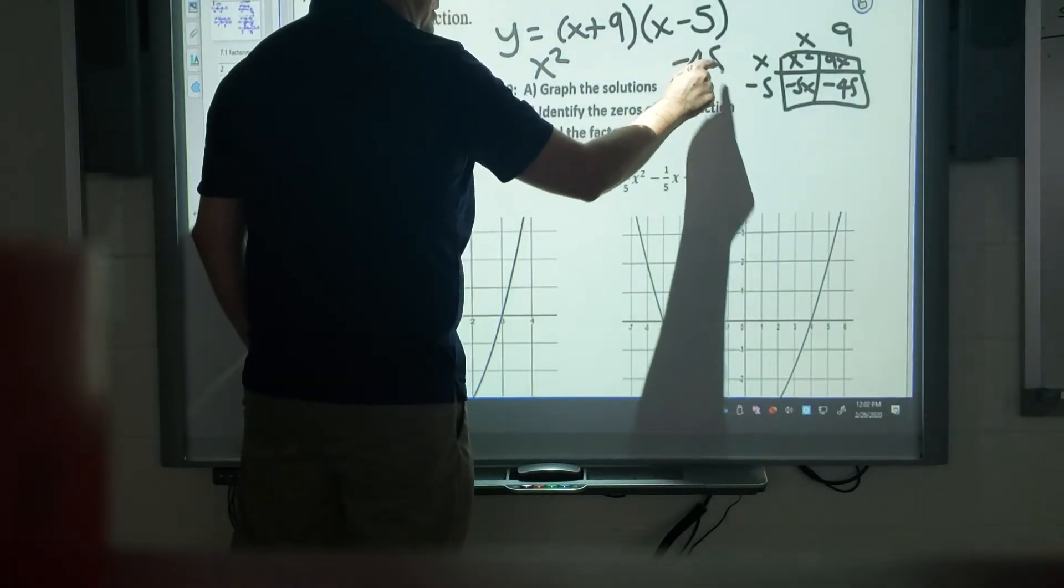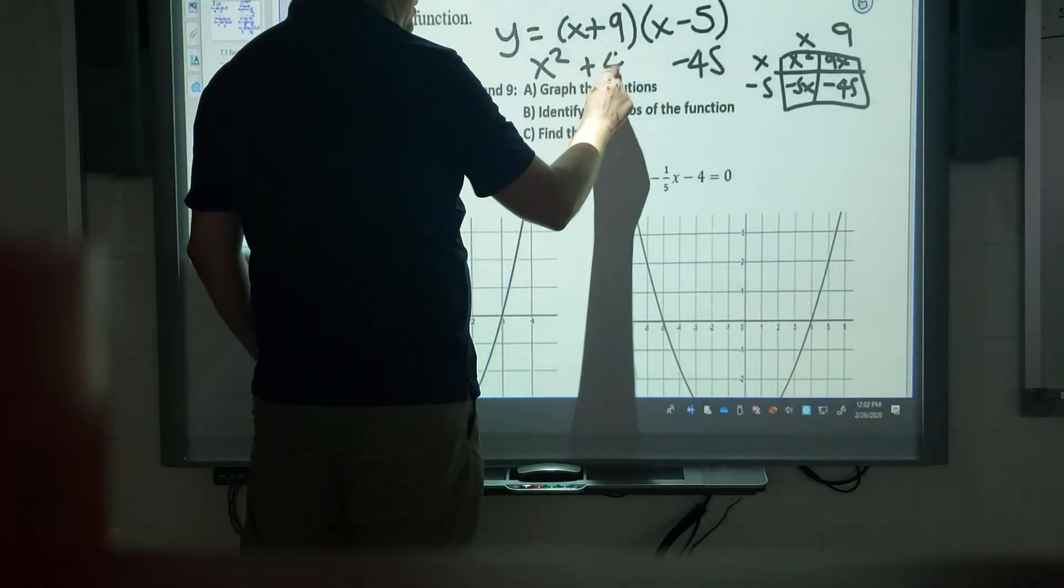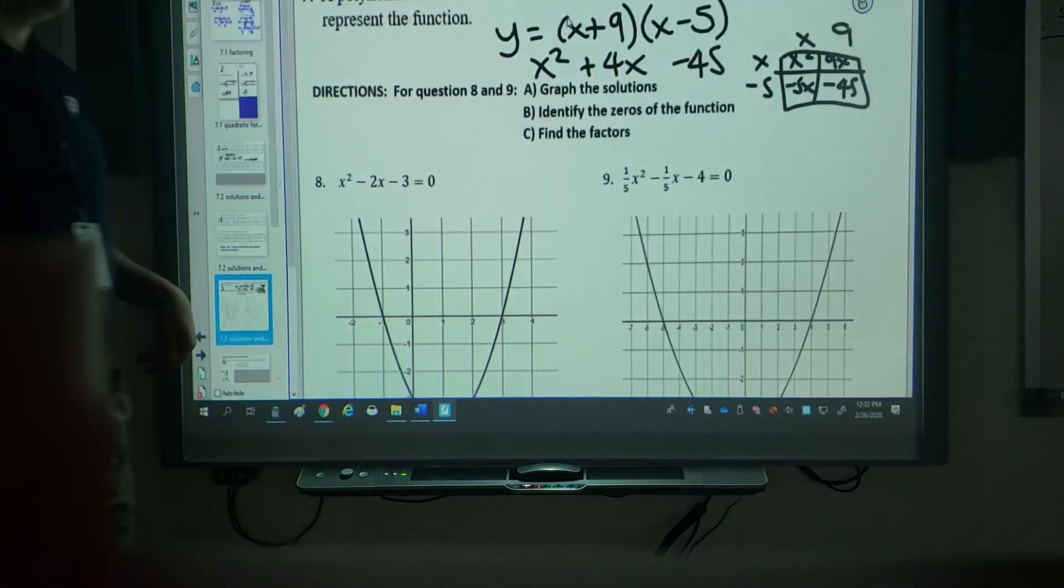So I got x squared. You can see I got minus 45 as well. And 9x add negative 5x, giving positive 4x. And you can get around the question that way.